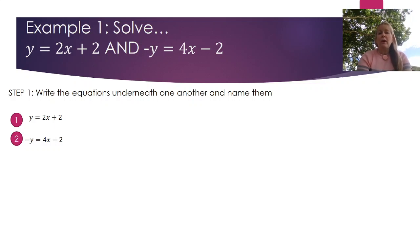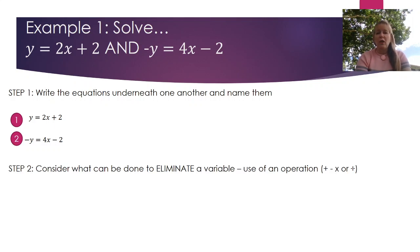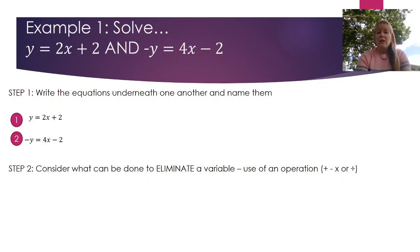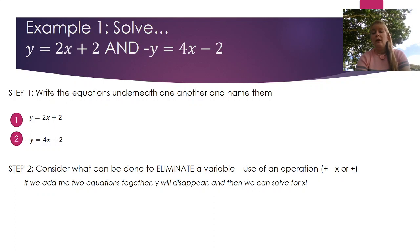When I have these two equations on top of one another I can decide which variable to eliminate, because it's much easier to solve an equation when you only have one unknown. Looking at equations 1 and 2, I think about what operation I can use to get rid of one variable — I could either add the equations together, subtract them, multiply, or divide. If we add equation 1 to equation 2, y disappears because y + (-y) = 0, and then I can solve for x.